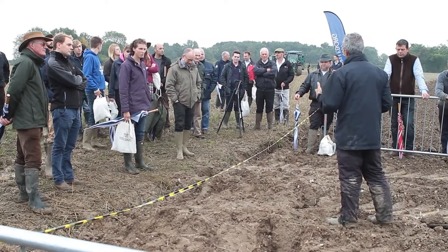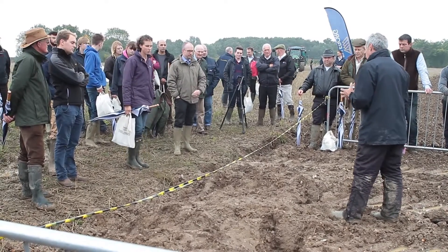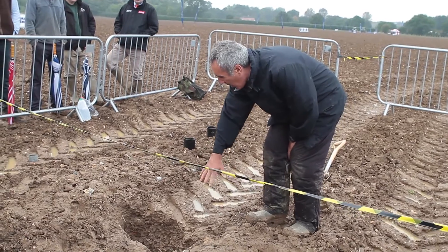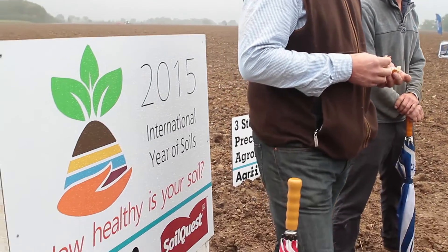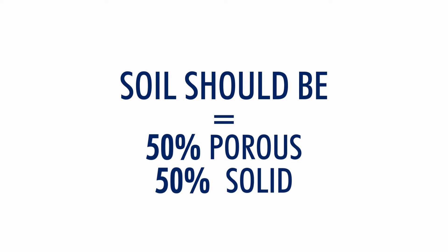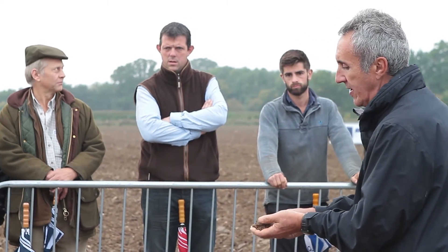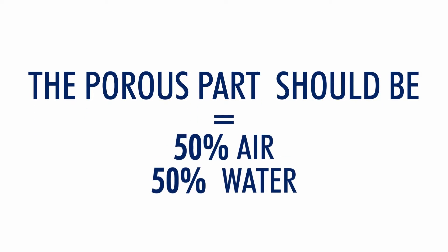It comes down to looking after your soil and keeping it open, maintaining the porosity. In an ideal world, soil has more or less 50% porosity. So if you have a lump of soil in your hand, it should have about 50% holes and 50% solid material, and within those holes you should have about 50% air and 50% water as a good balance.